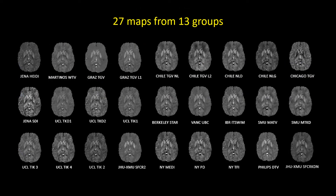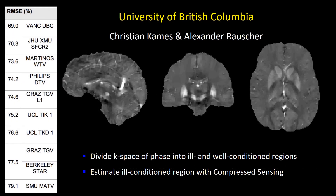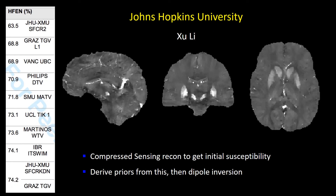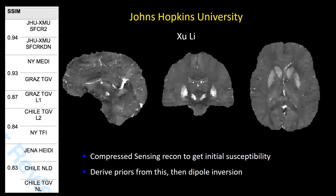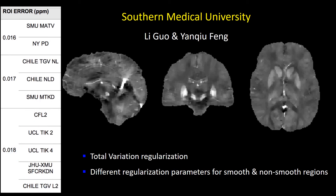We were fortunate to have 27 contributions from 13 groups around the globe. The winner in the RMSE category was the UBC group, who divided the k-space of phase data into ill-conditioned and well-conditioned regions and estimated ill-conditioned data using compressed sensing. The Johns Hopkins group won the HFEN category by also employing compressed sensing to get an initial susceptibility map, from which structural priors were derived for dipole inversion — they were also the winner in the SSIM category. The winner in ROI accuracy was the contribution from Southern Medical University, which employed total variation regularization with different regularization parameters selected for smooth and non-smooth regions.